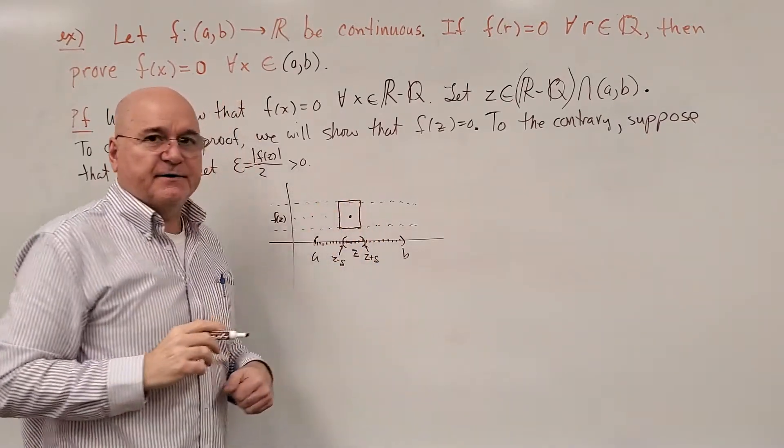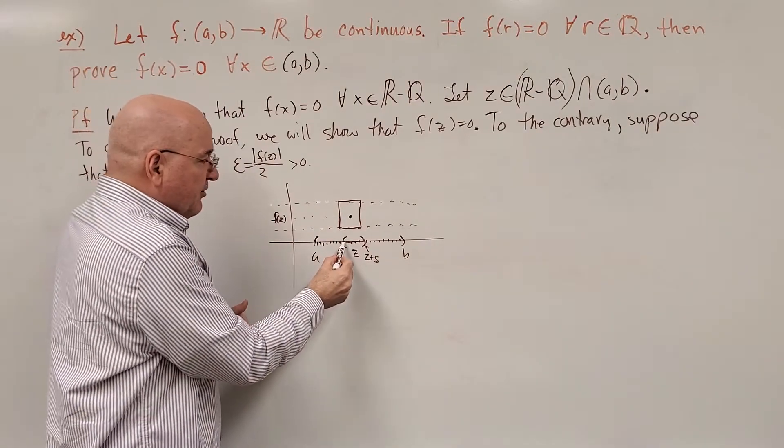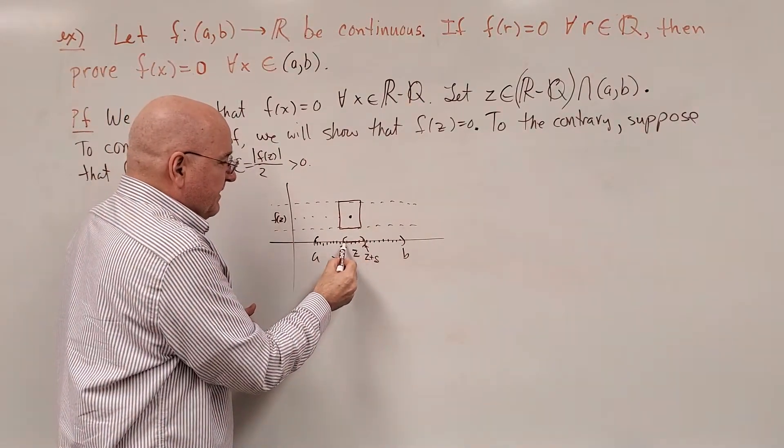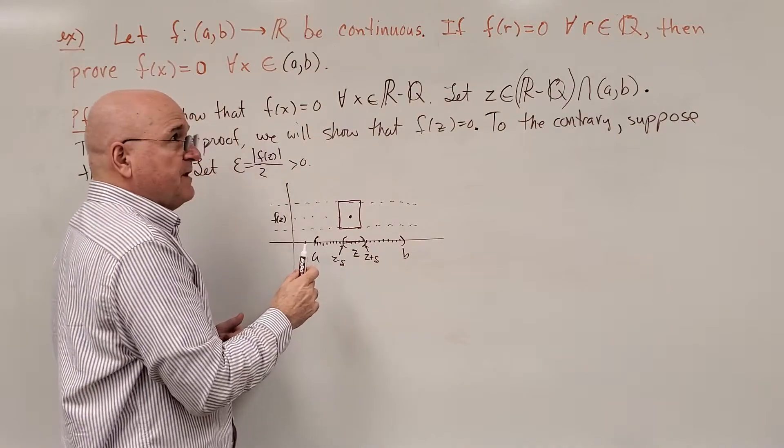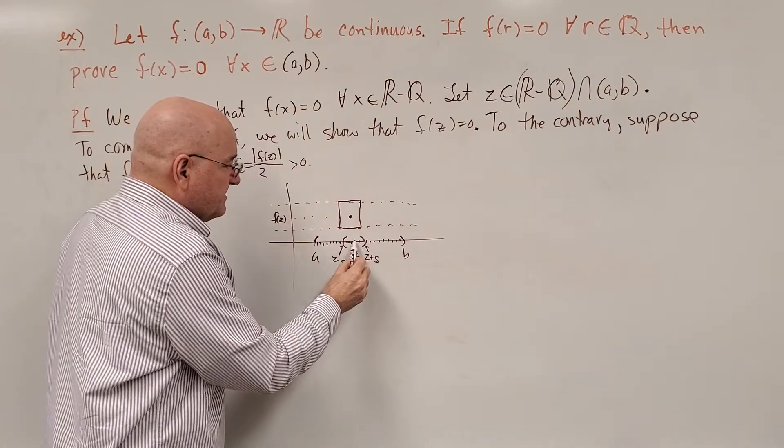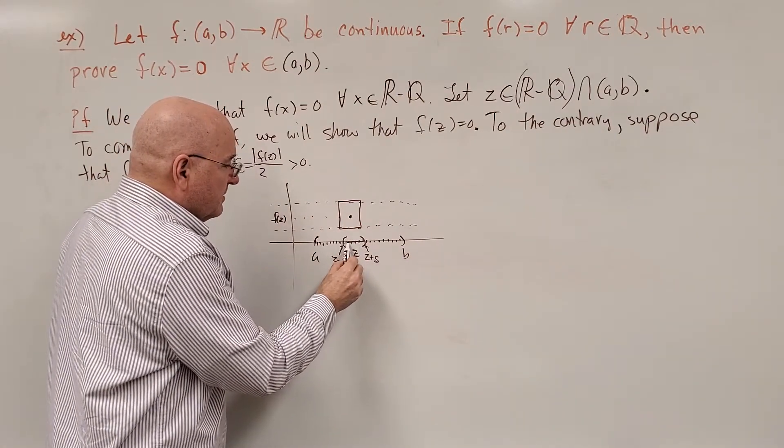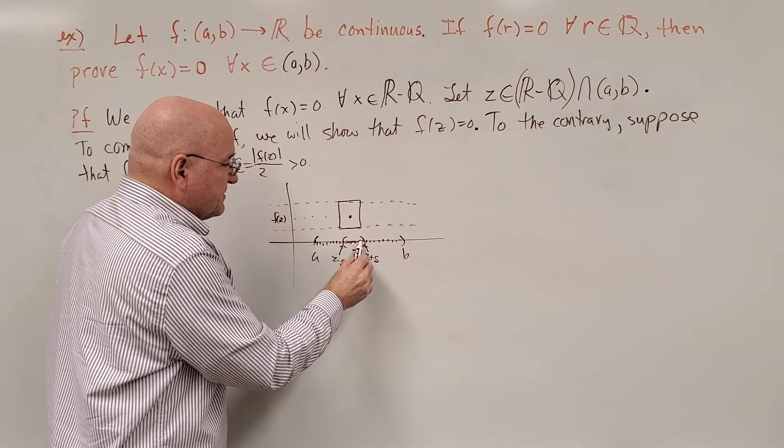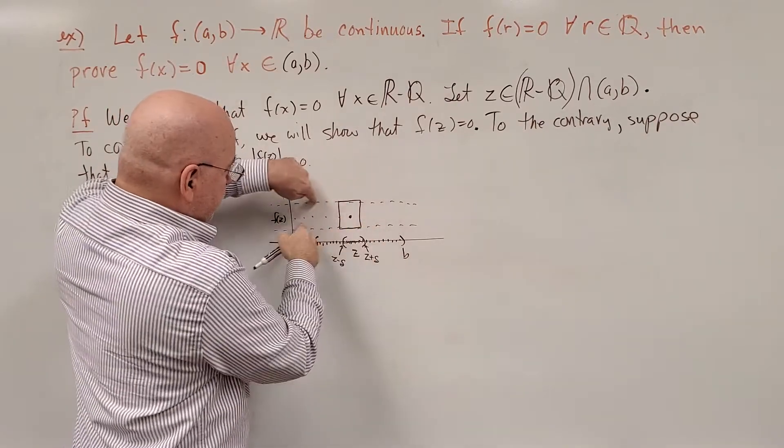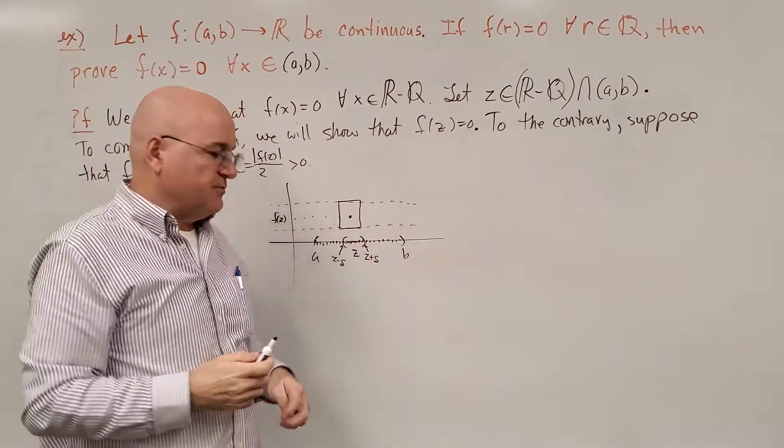But that's a contradiction because there are an infinite number of irrational numbers in this interval where f(x) would give us a 0. It's not in this tube here. So, that's how we're going to reach the contradiction.